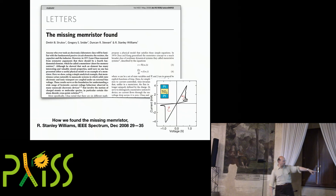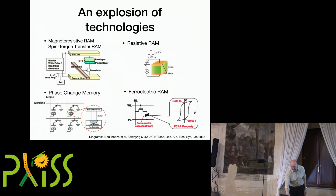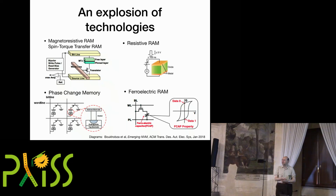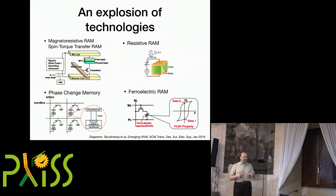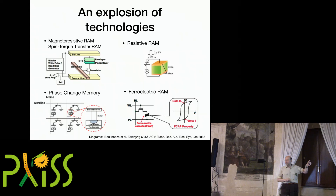That opened the door, and a lot of investment flowed into the area looking at very small devices that could exploit this property, as well as other properties which were by then reasonably well understood. There have been a whole bunch of different approaches — various basic technologies that have been exploited — but they all exploit some property of the material to give you that hysteresis curve and some small number of bits of storage. They all have the property that you don't need to maintain a current or voltage to maintain the state, so they're all non-volatile.